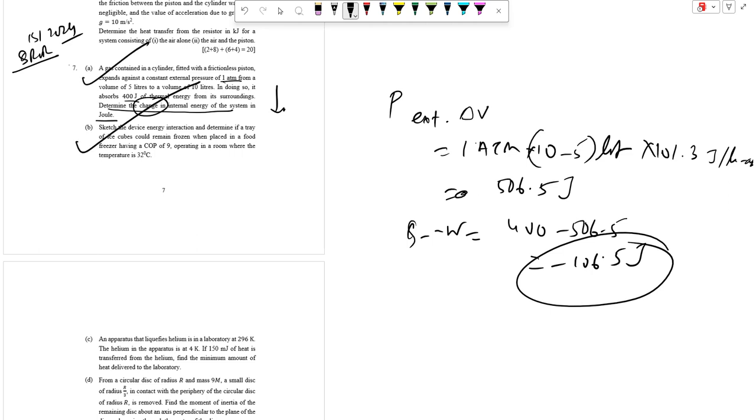7B is sketch the device energy interaction. Directly you can go for the freezer operates by removing the heat from the cold interior space with rejection. The work input you can do it and the coefficient of performance which is COP, here is Q cold by this thing.